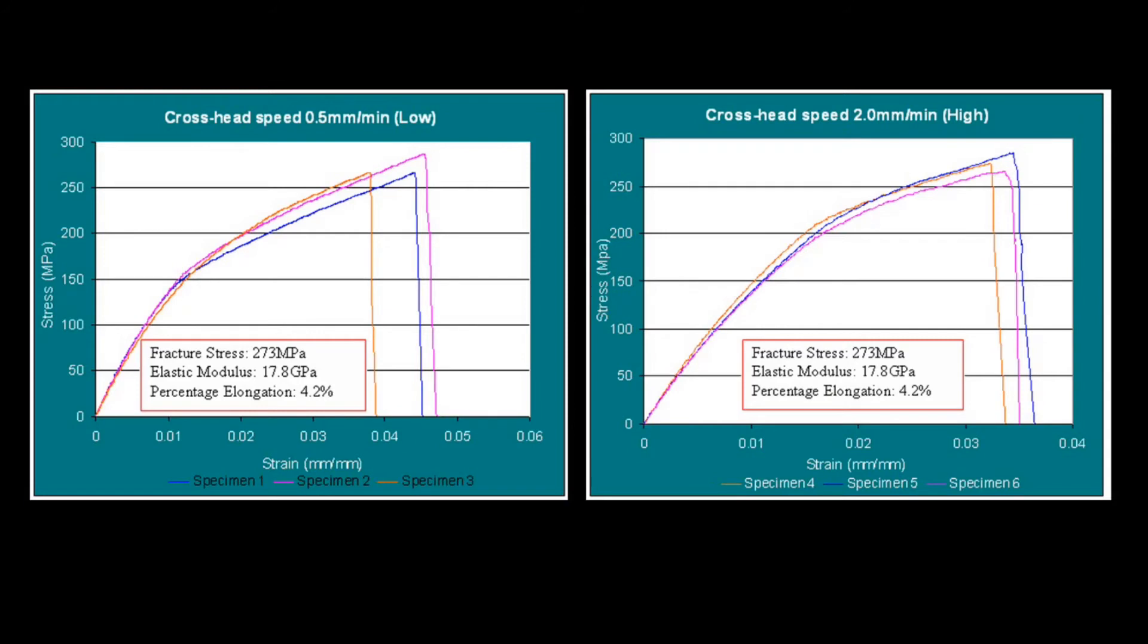That means the material is fracturing in a brittle manner, but because it is a composite, therefore there is a delamination between the fiber and the matrix and this delamination tends to make the material tougher.